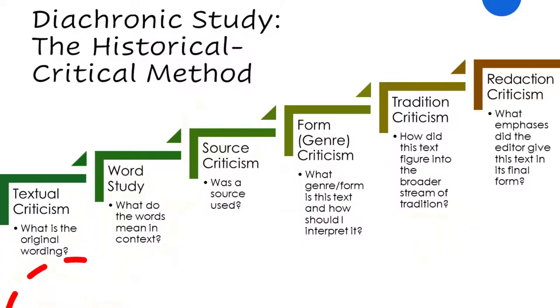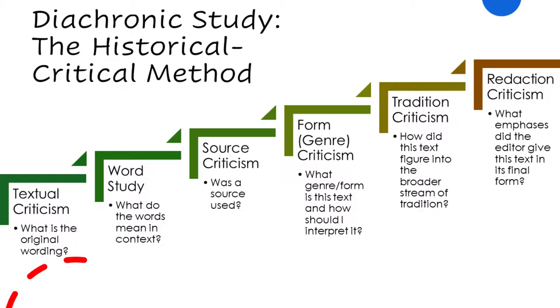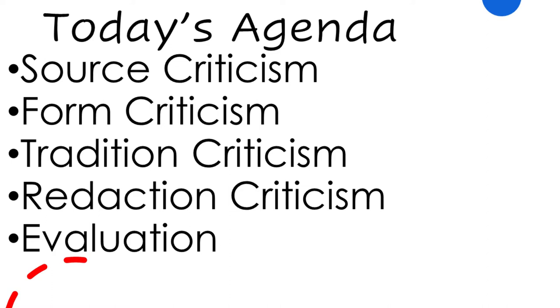We've already looked at the historical critical method and talked about the first two stages: textual criticism and word study. Today we're going to look at the last four stages — source criticism, form criticism, tradition criticism, and redaction criticism. We're going to see that they have a lot to do with each other and can help us understand a lot about the world behind the biblical text. That's our agenda for today.